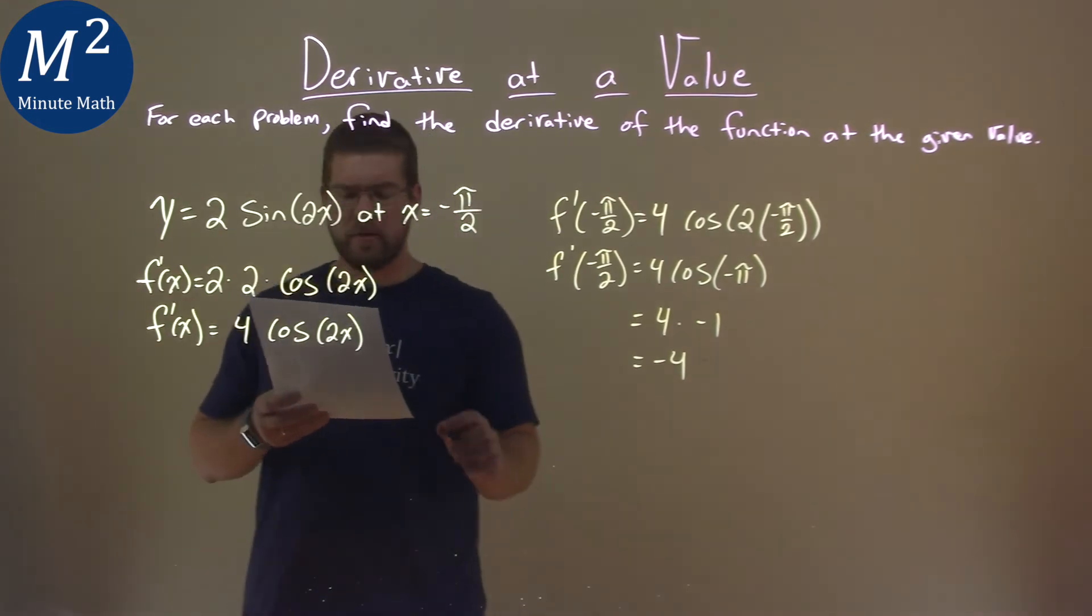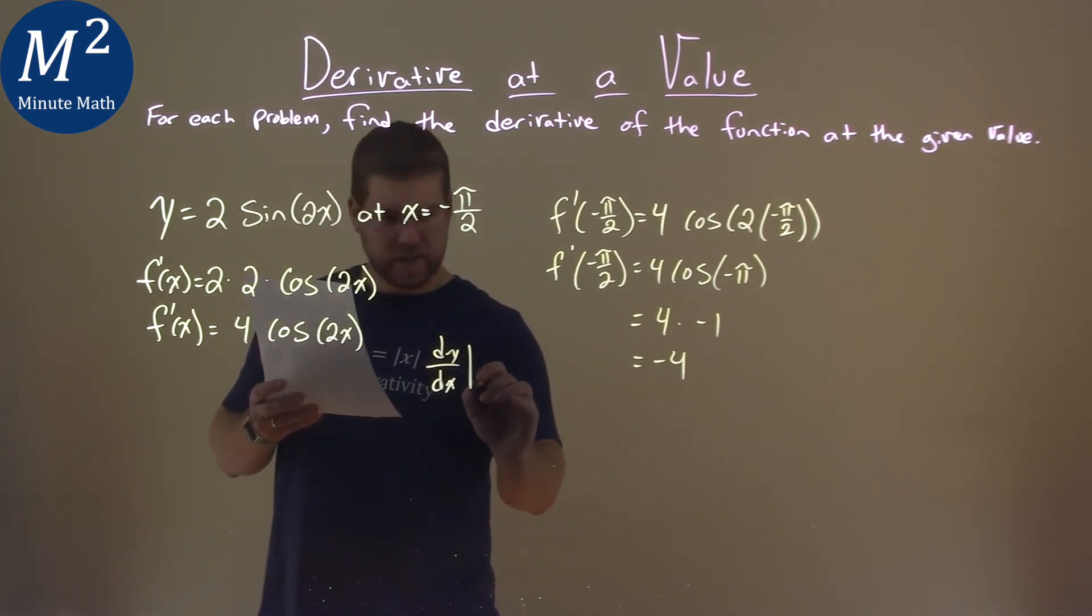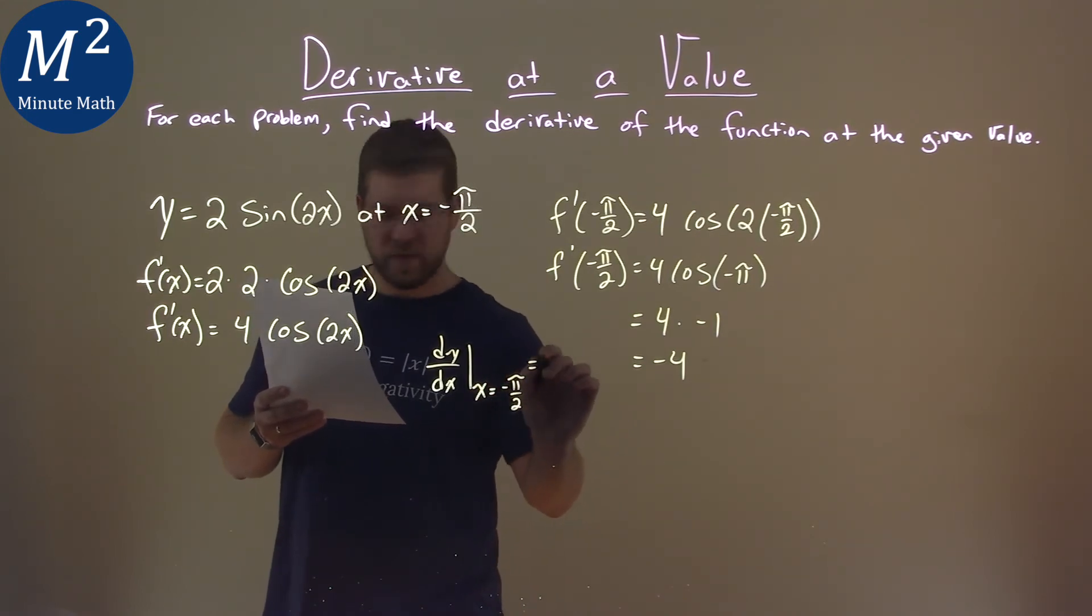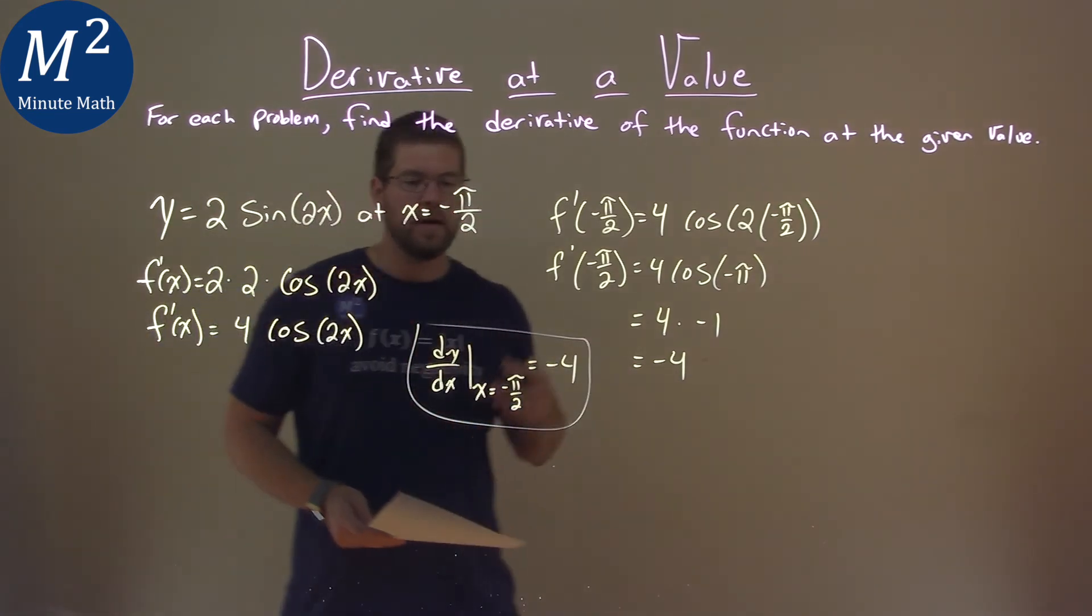So we can write our answer like such: dy dx, where x is equal to negative pi over 2, is equal to negative 4, and that is our final answer.